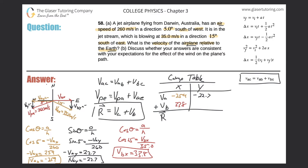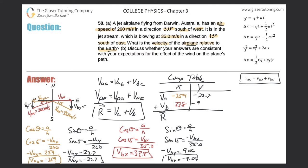For the y component, I know the hypotenuse and angle and need the opposite side, so I use sine. Sine(15°) equals negative V_By divided by 35.0. So negative V_By = sine(15°) × 35 = 9.06. Moving the negative sign over gives negative 9.06 meters per second. Plugging that into the table: negative 9.06.